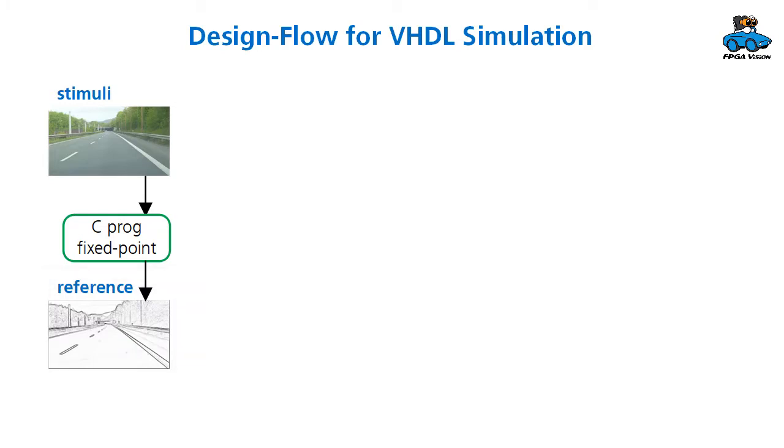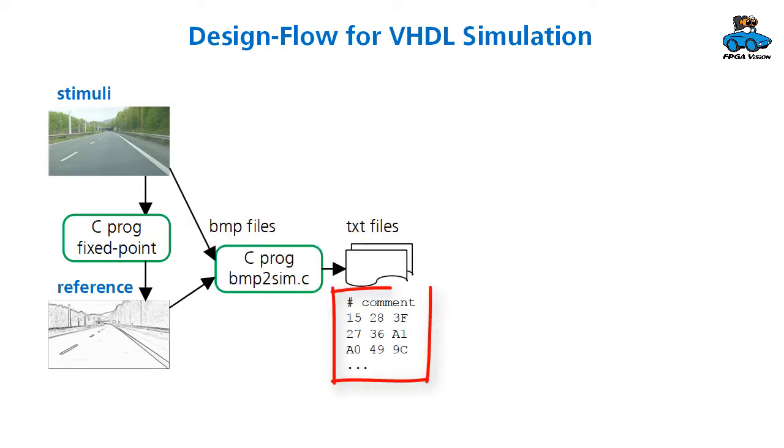These images are in bitmap format and VHDL cannot easily read this format, so therefore we have to convert it to a text file. I used a format that is quite simple. You have the bitmap file represented as a text file, where each line corresponds to one pixel. So you start with one line of a comment, and then you have the first pixel with RGB, the second pixel with RGB, and so on. It's a big file, but we need all this information for simulation.